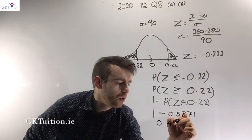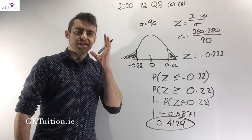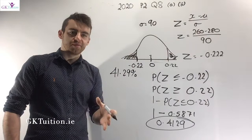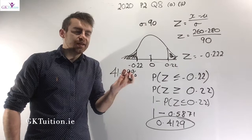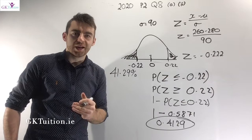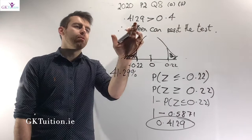So 0.4129, or 41.29%, of people who sat this test did worse than Eileen. Since 0.4129 > 0.40, Eileen is above the 40th percentile. Happy days — Eileen has just about made the cut and will be allowed to retake this test.